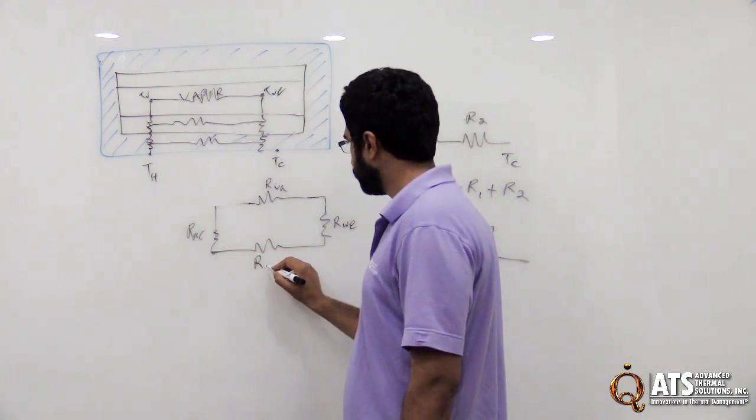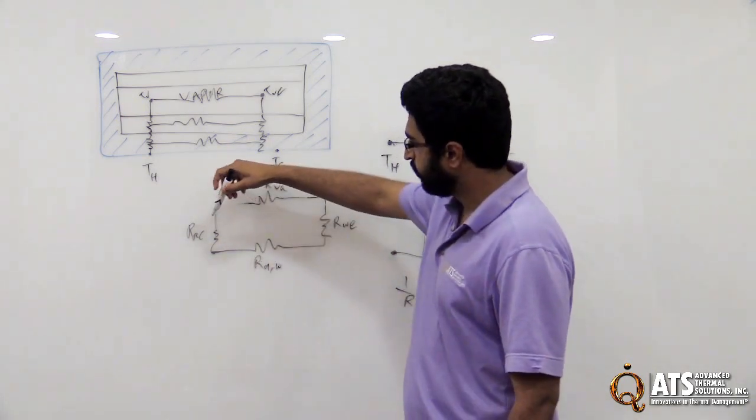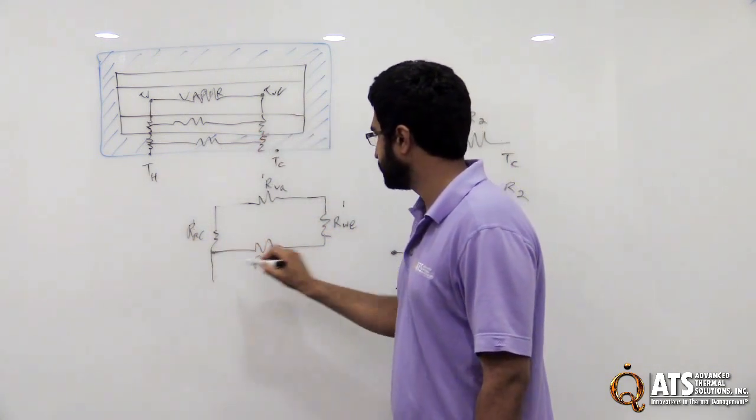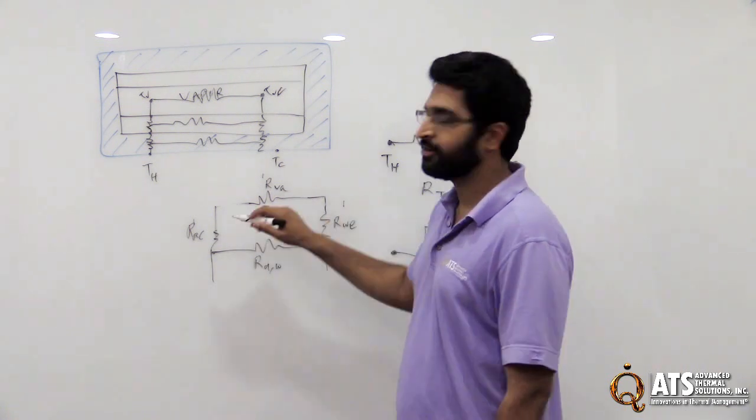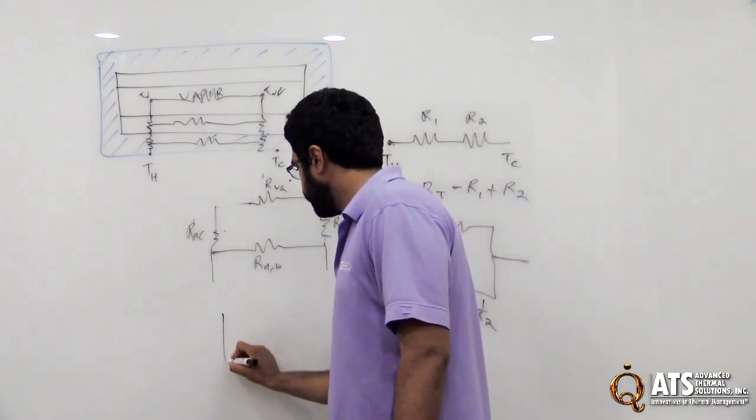And this is the axial resistance in the wick structure. So you have this network here. What you'd want to do is combine these three into parallel first. Because finally the heat is transferring this way. So combine these three, oh excuse me, in series. Combine these three in series, and then that'll become one resistance.